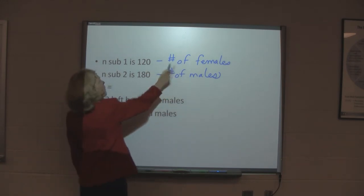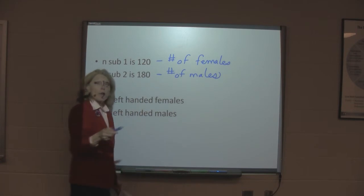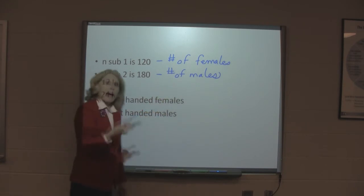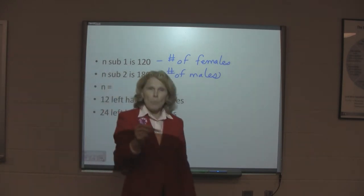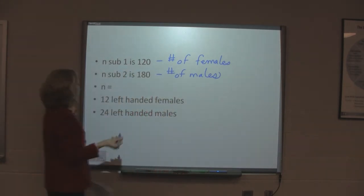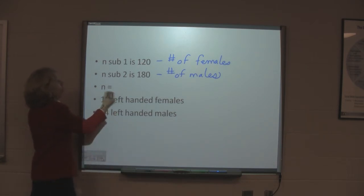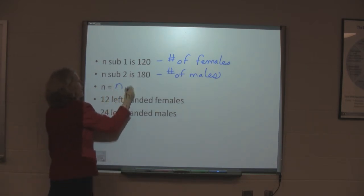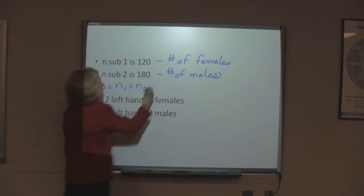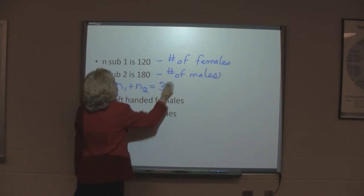So, some number of females out of the 120 are going to be left handed and some will be right handed. And the same with the males. Out of the 180, some will be left handed and some will be right handed. The total n, then, is n1 plus n2. So, in our case, that's going to be 300.